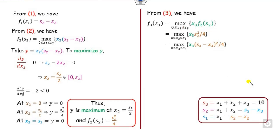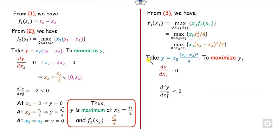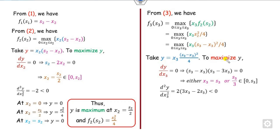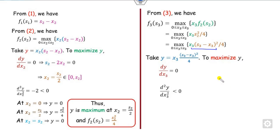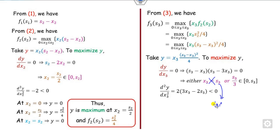We substitute f2(s2) into equation number three. The value of s2 is s3 minus x3, and we substitute f2(s2) = s2²/4. Again, the target is to maximize, so we take y equal to this expression and compute the derivatives. Setting the first derivative to zero gives x3 = s3/3. Note that x3 = s3 would be a trivial case, so x3 = s3/3.